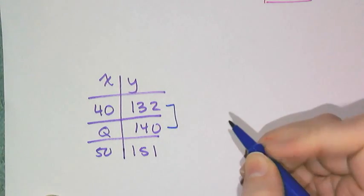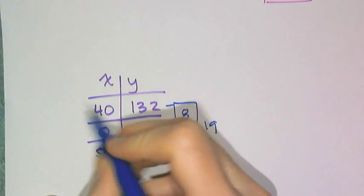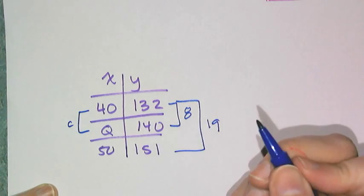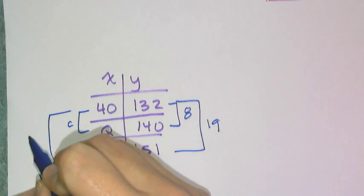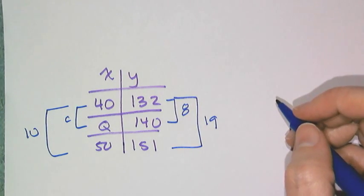The difference between that and that is 8. The difference between those two numbers is 19. The difference between 40 and q is some unknown that I'm trying to find, and 40 and 50 is 10. And so then I can set up any number of proportions.